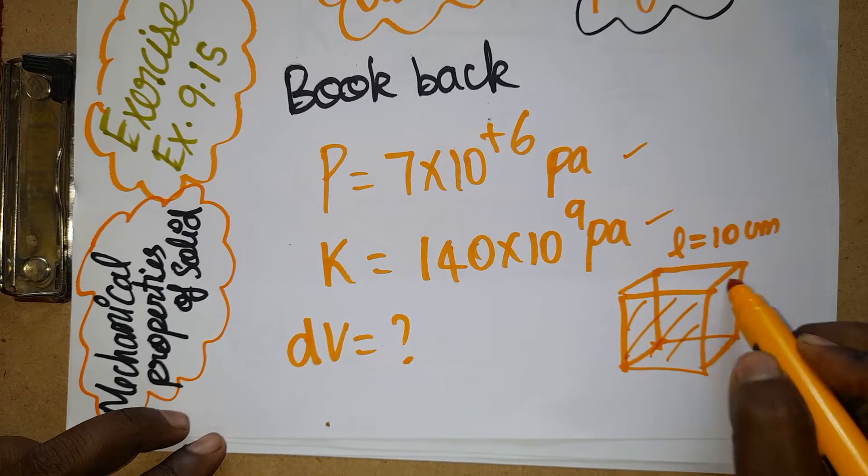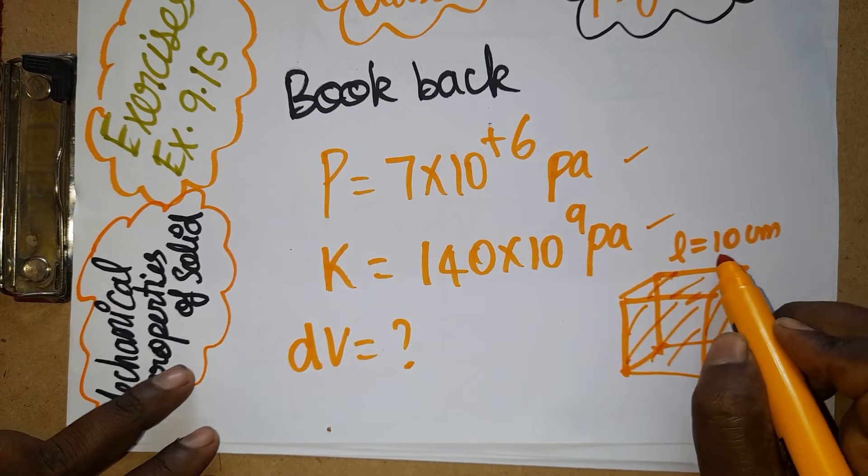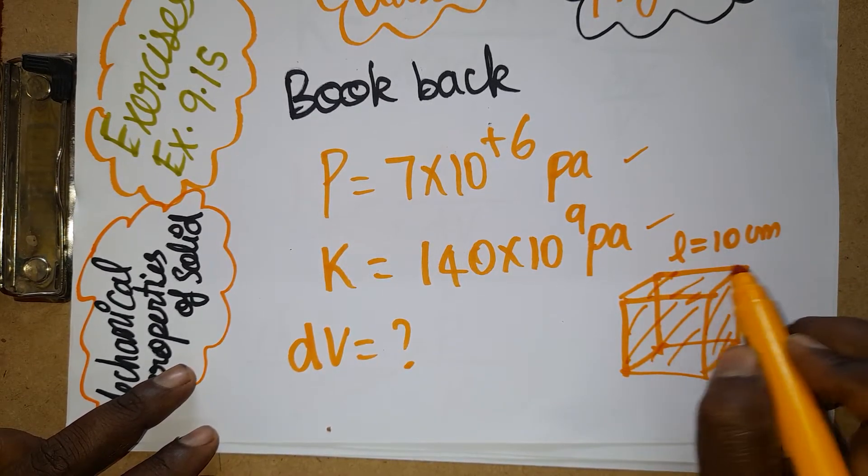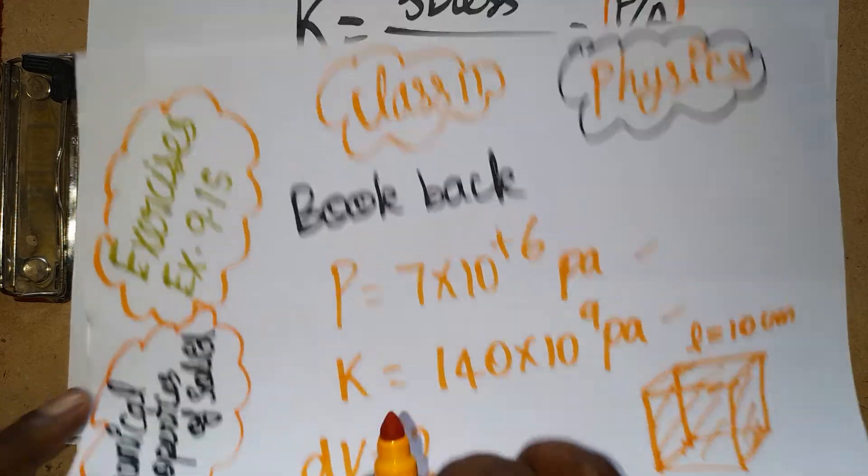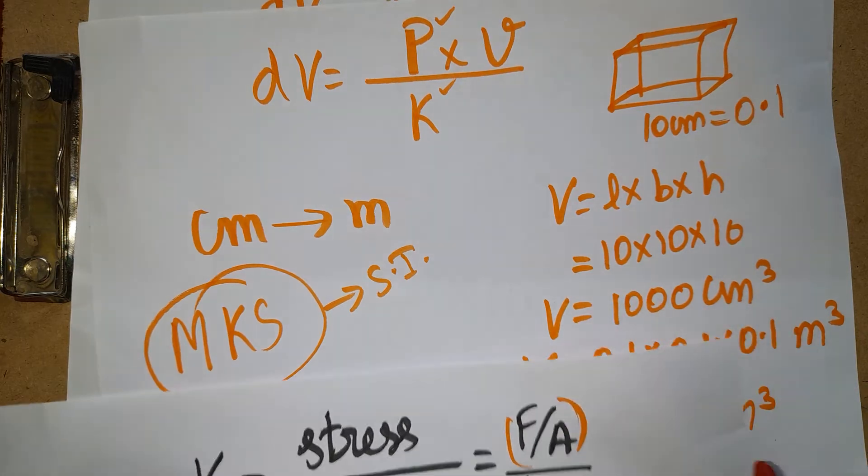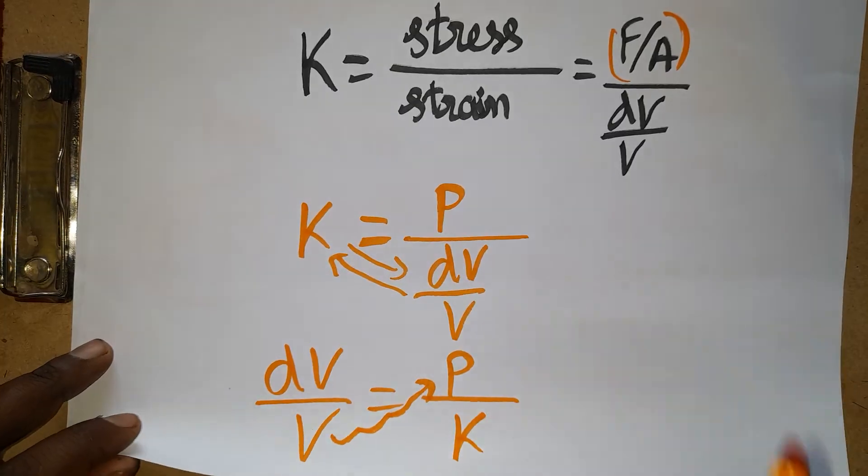It is a cuboid. One side of the cuboid is 10 centimeters, which is given in the question. Now I am going to find what is the changing volume. First, you need to know how to modify the formula.